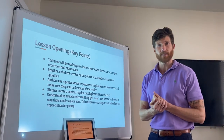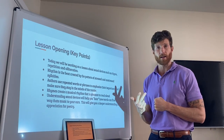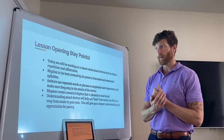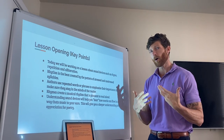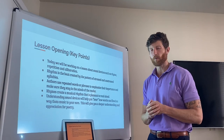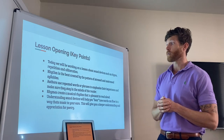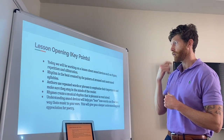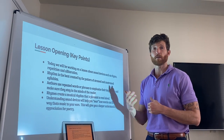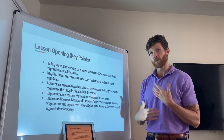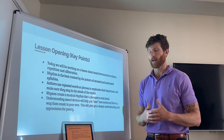Key points for today's lesson: we're going to be working on a lesson about sound devices such as rhyme, repetition, and alliteration. Rhythm is the beat created by the pattern of stressed and unstressed syllables. When we're looking for the rhyme scheme or the rhythm in a poem, we always want to look at the end of each line of poetry. Authors use repeated words or phrases to emphasize their importance and make sure they stay in the minds of the readers. As we read, we're going to annotate these poems and look for words or phrases that the authors are repeating — generally they want to emphasize those lines, so they're really important to notice and annotate.